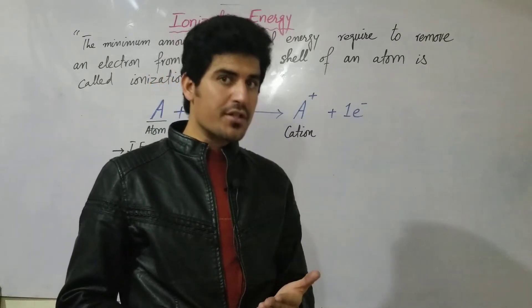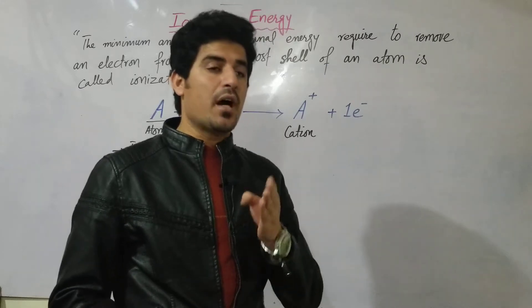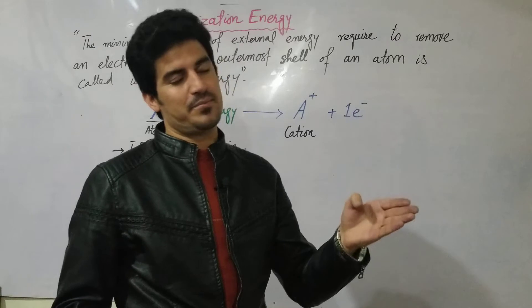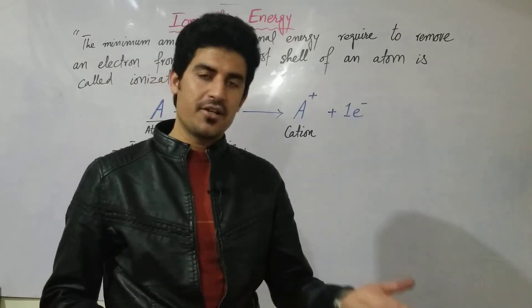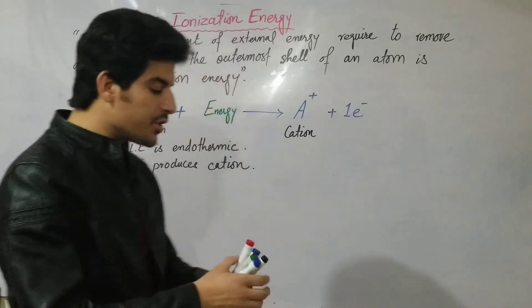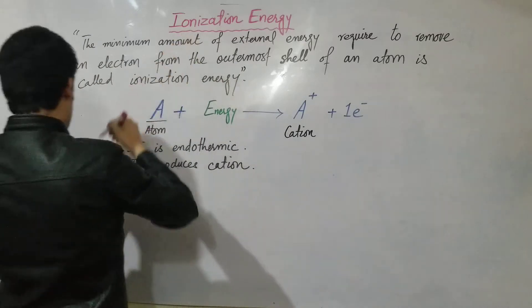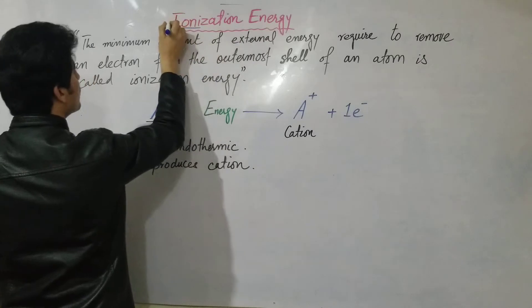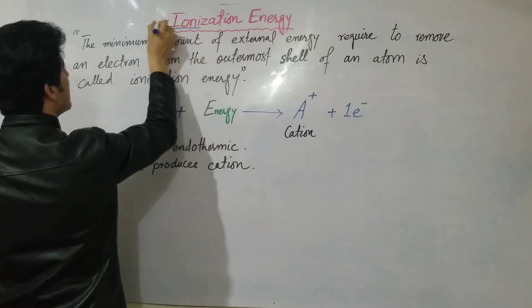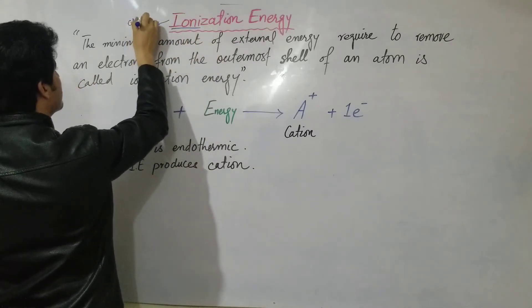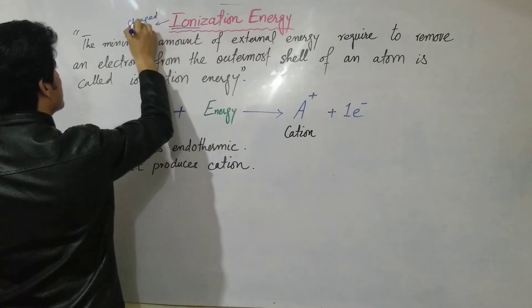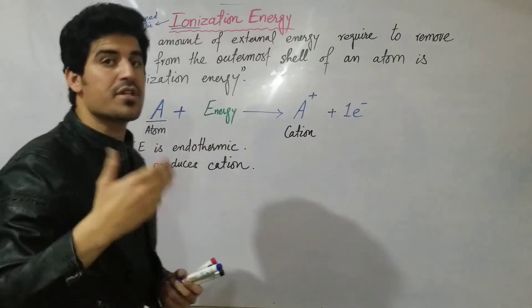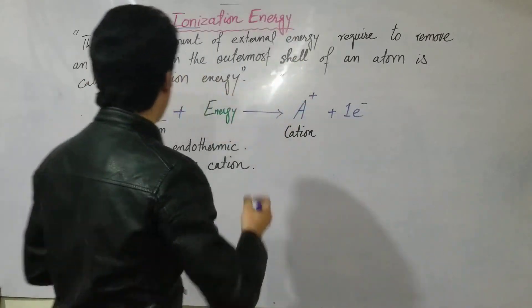The modern definition: the amount of energy required to ionize an atom is called ionization energy. The term 'ion' refers to a charged species — we have already discussed that ions can carry positive or negative charge.